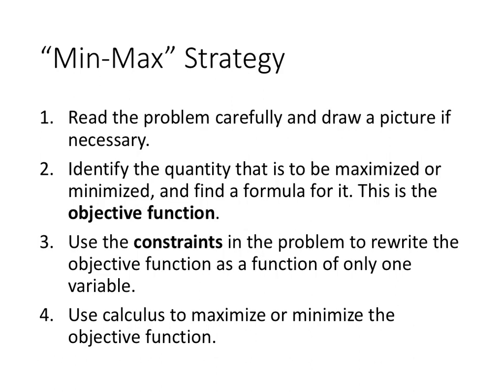Once you've done that, you want to identify the quantity that you want to maximize or minimize. That's going to be the objective function. Then, use the constraints in the problem, the restrictions, the constants, the things that don't change, the relationships that are constant, to rewrite the objective function as a function of only one variable.